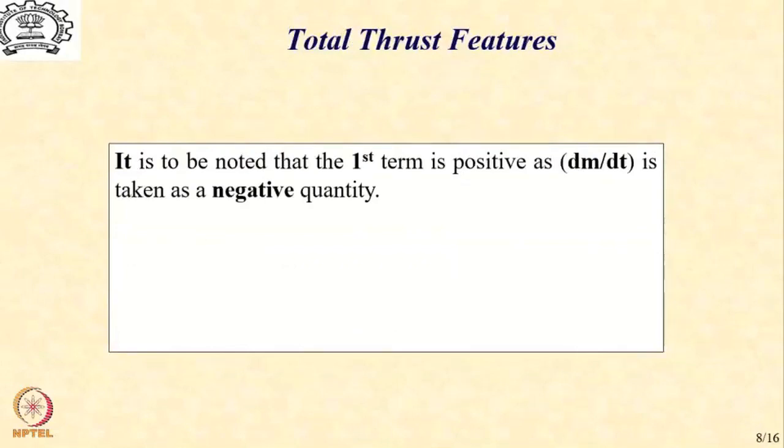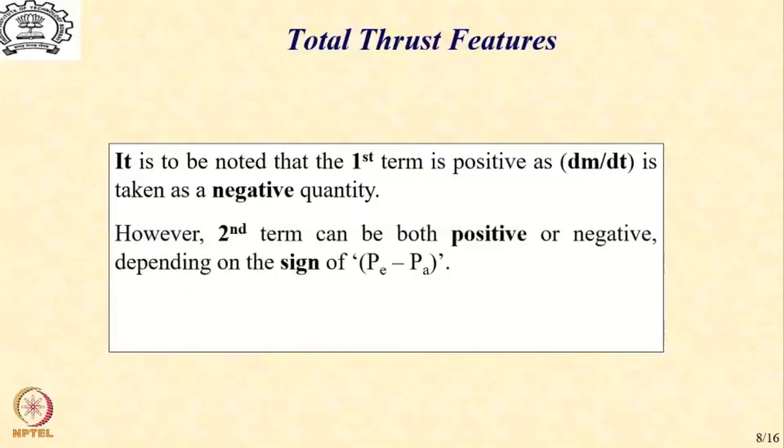As I have mentioned, the first term is positive because dm/dt is negative. However, you will note that the second term can be either positive or negative depending upon the sign of P_e minus P_a. If P_e is greater than P_a, you will get a positive value. On the other hand, if P_e is less than P_a, you will get a negative value.